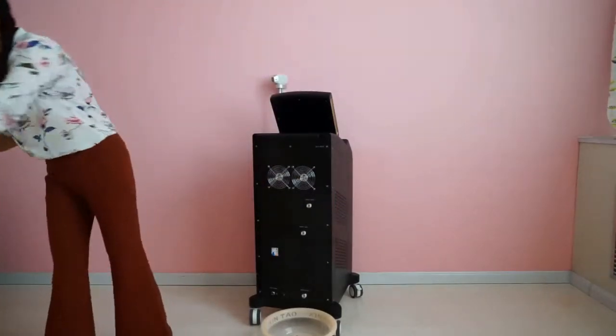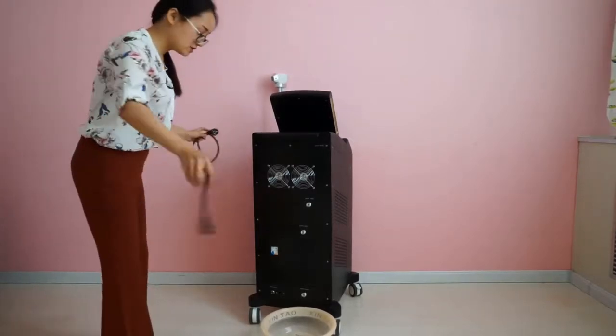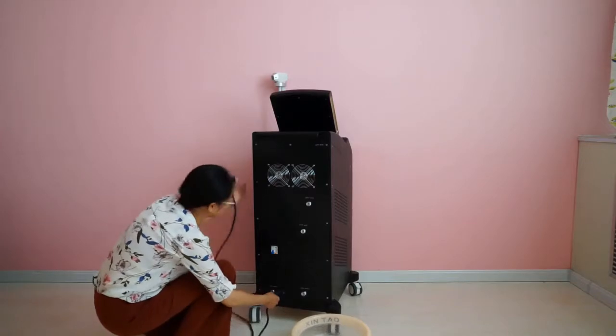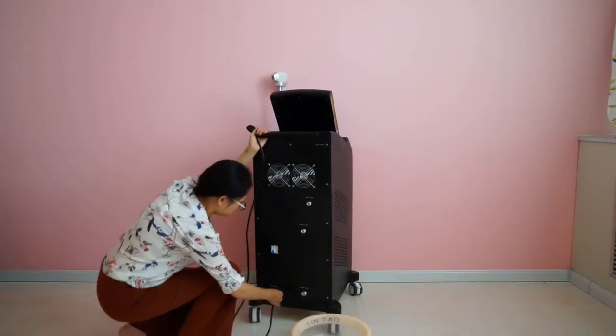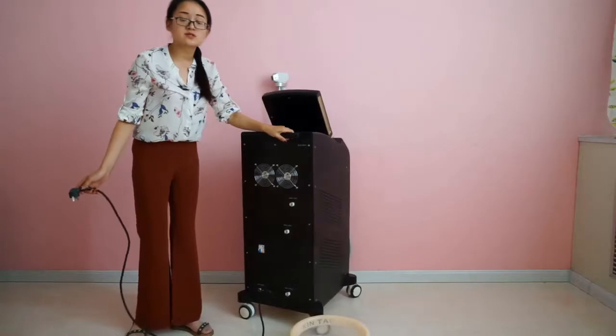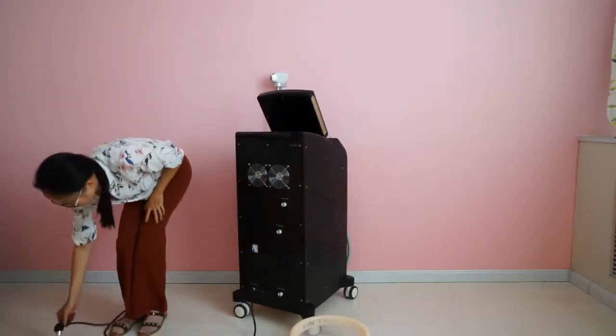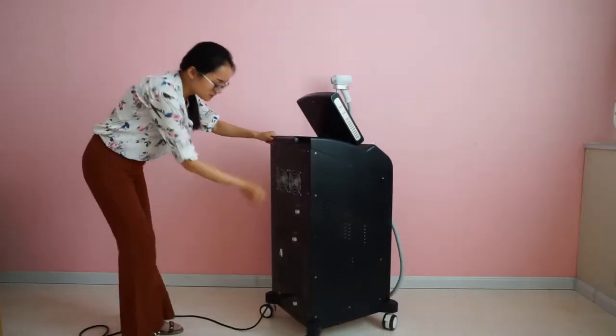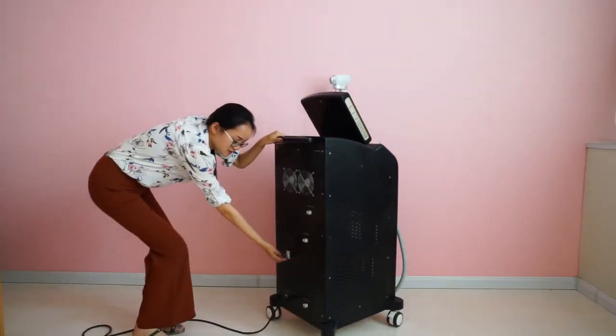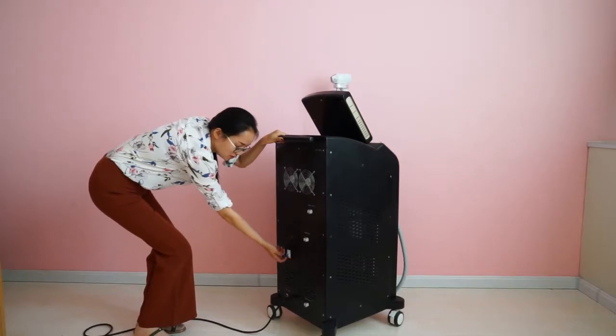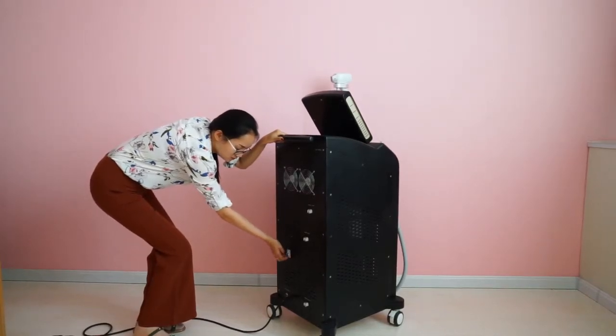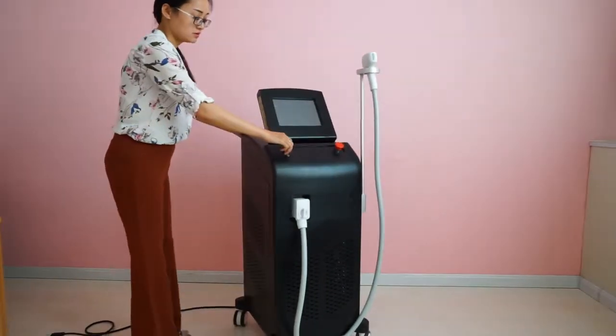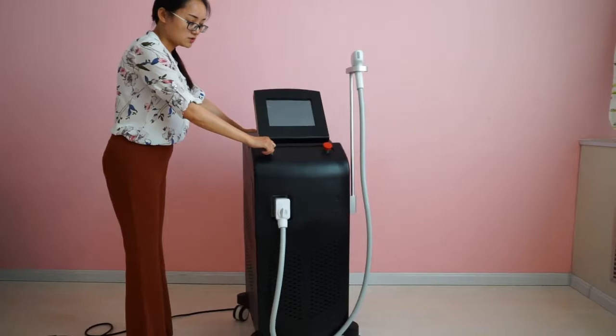Then, we should connect the electricity wire. Connect it here. Then, connect it with the electricity. You see, this machine here is a safety switch. We should turn on it first. Turn on. That way, turn on the machine.